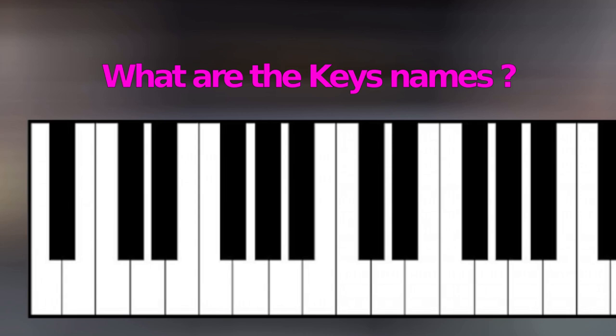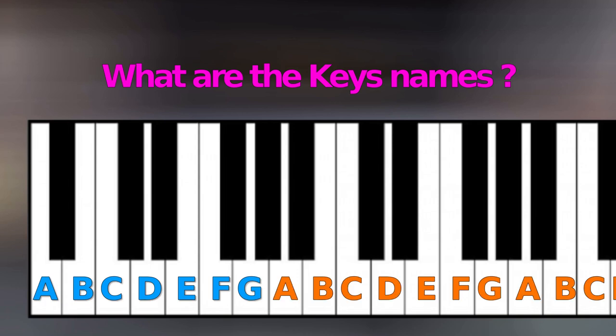So the first white key is called A, the second white key B, then C, D, E, F, G, and then the pattern repeats again. So the names are simply the first 7 letters of the alphabet: A, B, C, D, E, F, G.